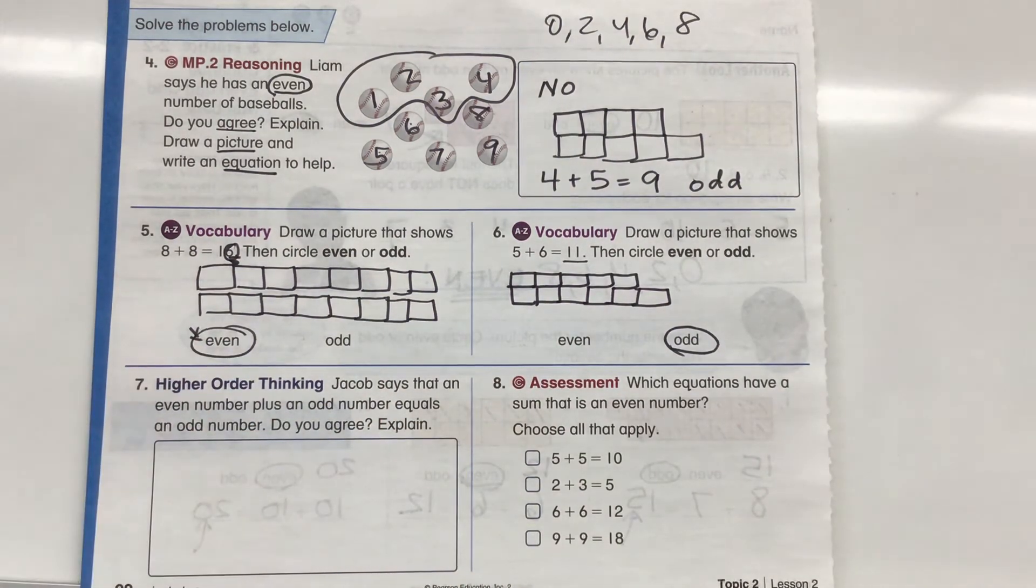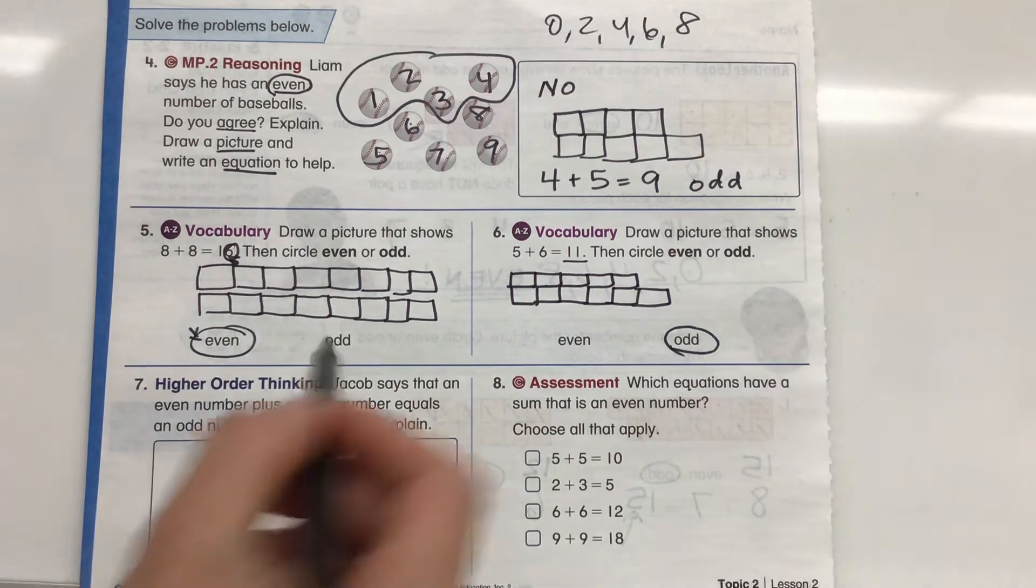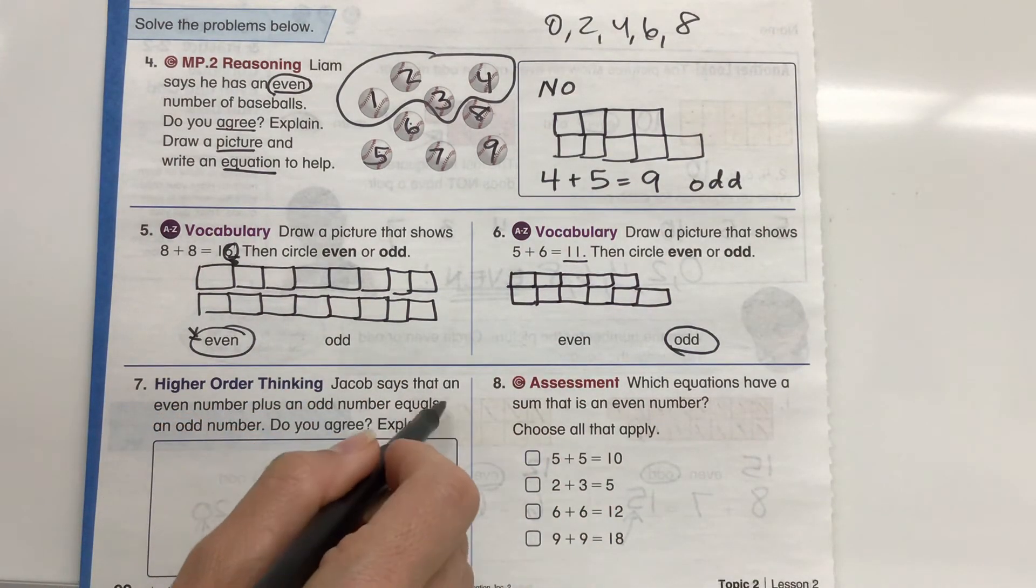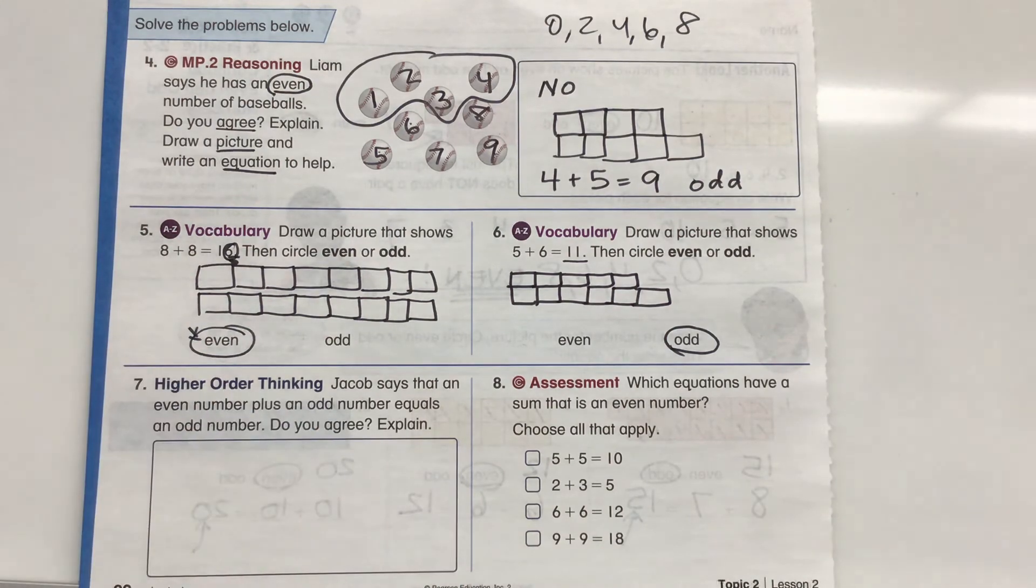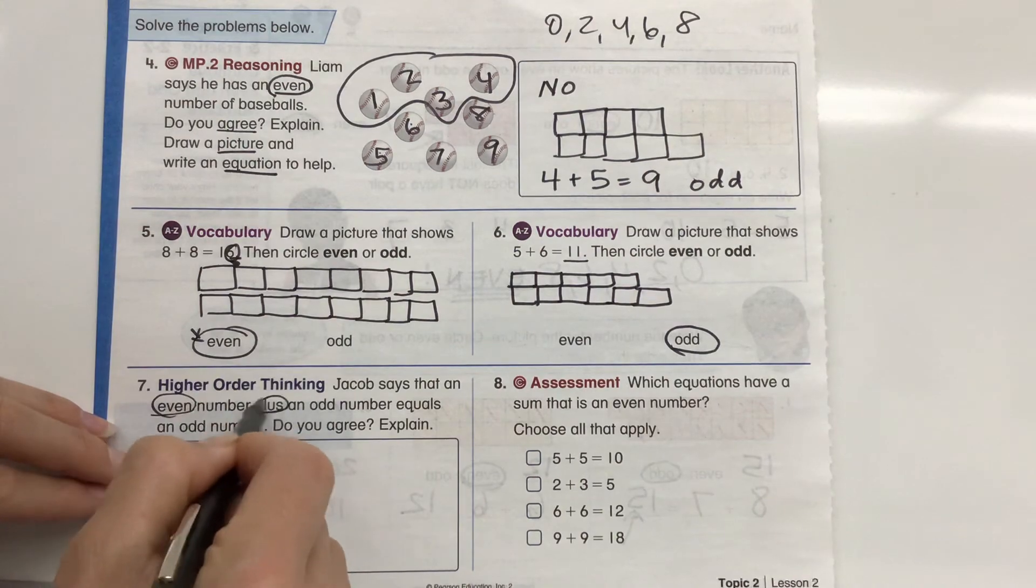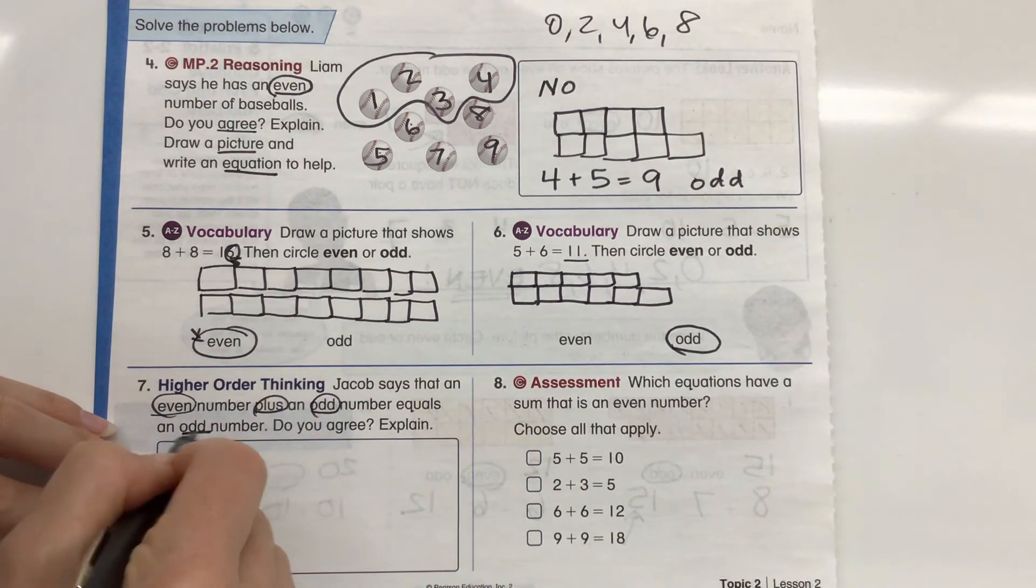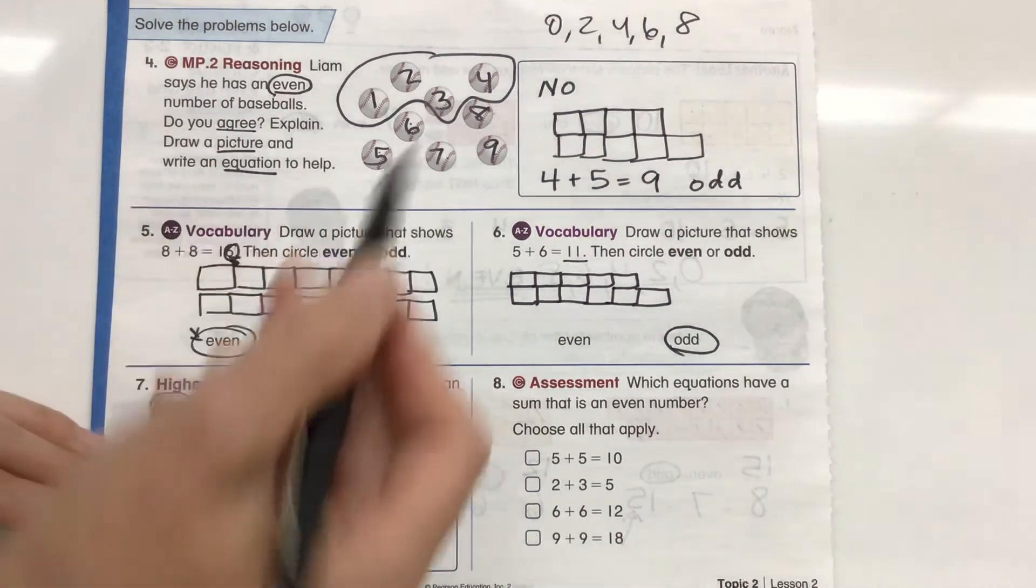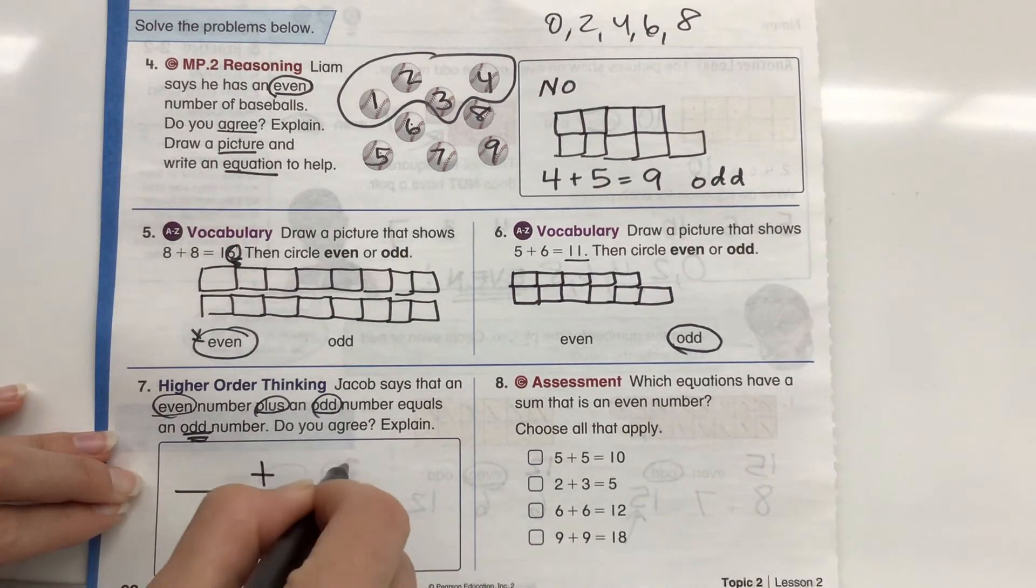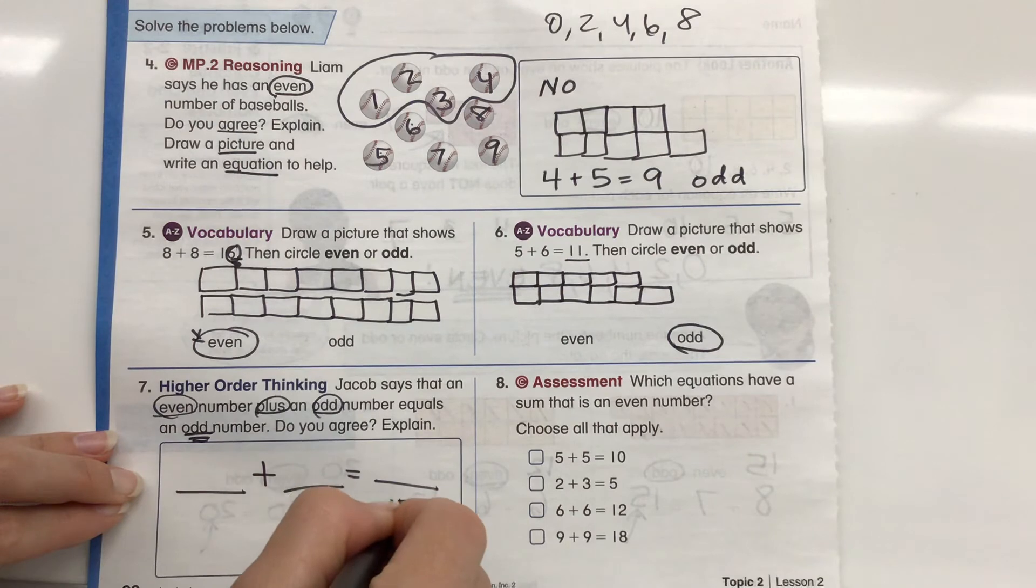Okay. Higher order thinking. This is our brain exercise for the day. Jacob says that an even number plus an odd number equals an odd number. Do you agree? All right. So we need to do an even number plus an odd number. It's always going to make an odd number. Let's see. So we can pick any even number. So I'm going to do my equation.